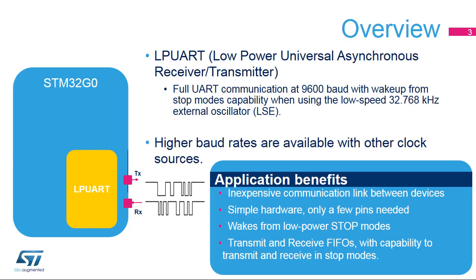The Low Power Universal Synchronous Asynchronous Receiver provides full UART communications at 9600 baud when the LP UART is clocked using a low-speed external 32.768 kHz oscillator named LSE. Higher baud rates can be reached when it's clocked by clock sources different from the LSE clock. Applications can benefit from the easy and inexpensive connection between devices, requiring only a few pins.